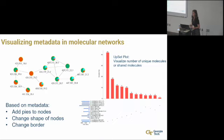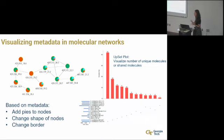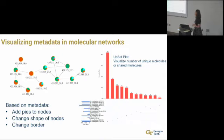We also like to use upset plots. These are analogous to Venn diagrams. Venn and Euler diagrams, once you get more than three or four groups, tend to be very difficult to read. I really like upset plots because you can look at multiple sets and see the intersection and distribution. Here we're showing all the unique features. You read: this is your sample, this is the number of metabolites at the intersection being described, and this is the number of features.